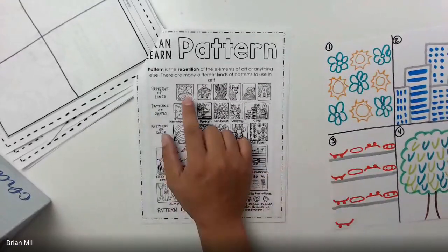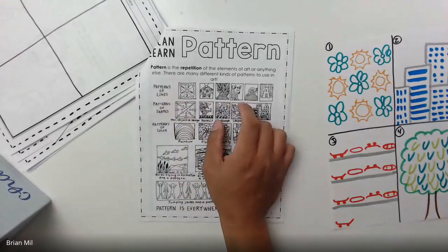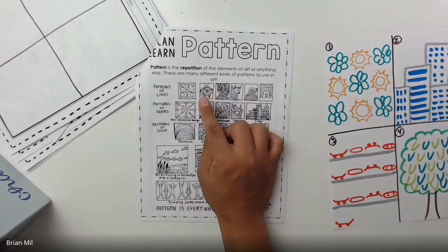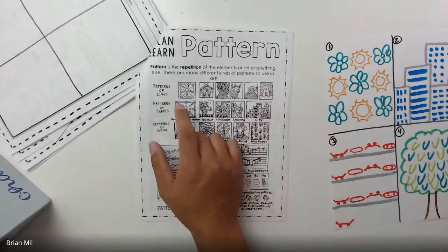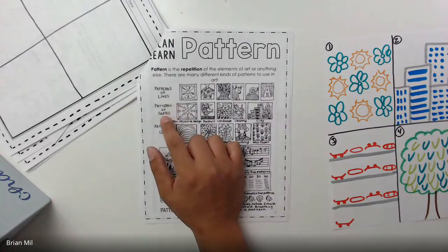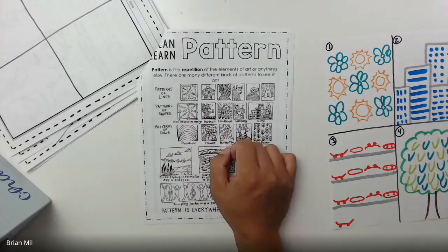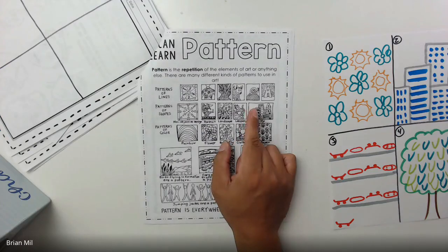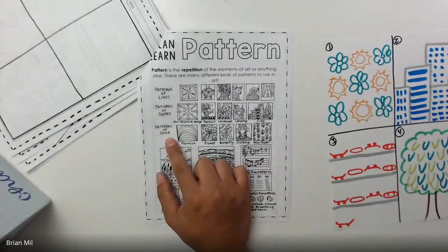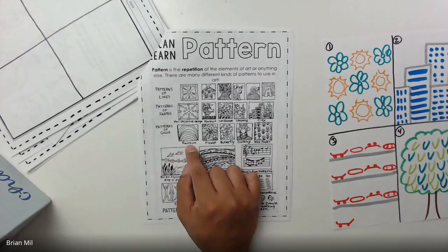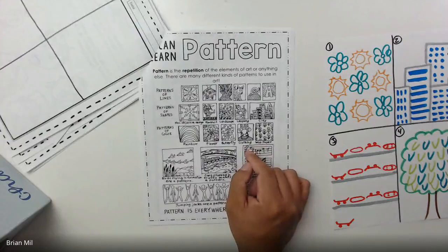So in pattern, you can use it with line. You can see here it's represented with stripes, dash lines, swirls, and zigzags, and even like kind of like fireworks. Patterns you can use with shapes as seen with this one. There's hearts, circles, rectangles, squares. You can use patterns using only color if you'd like. So color such as rainbows, flowers, butterfly, clothing, and wallpaper, anything else that's not listed.